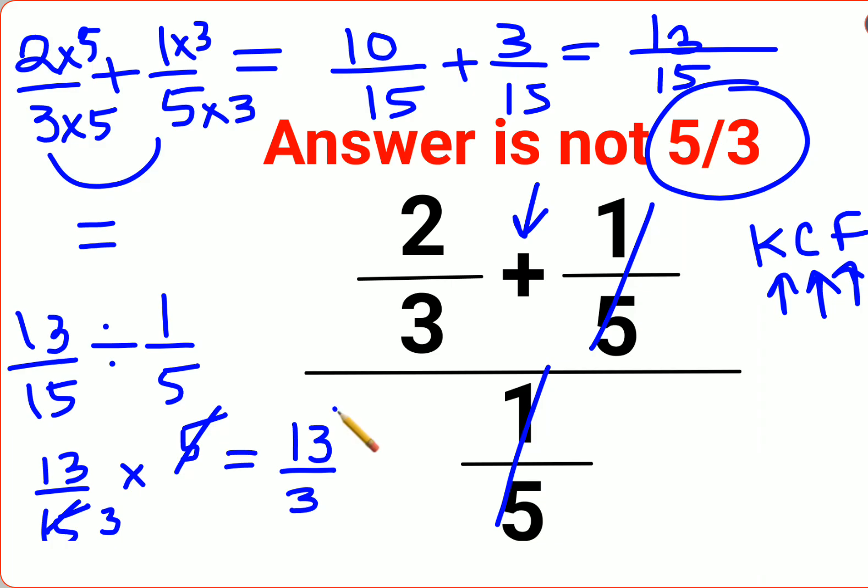Which is an improper fraction because the numerator is greater than the denominator, which can be written as 4 and 1 upon 3 in mixed fraction form. Okay, so I hope this is very clear to everyone. That's it for today, I will see you in the next video.